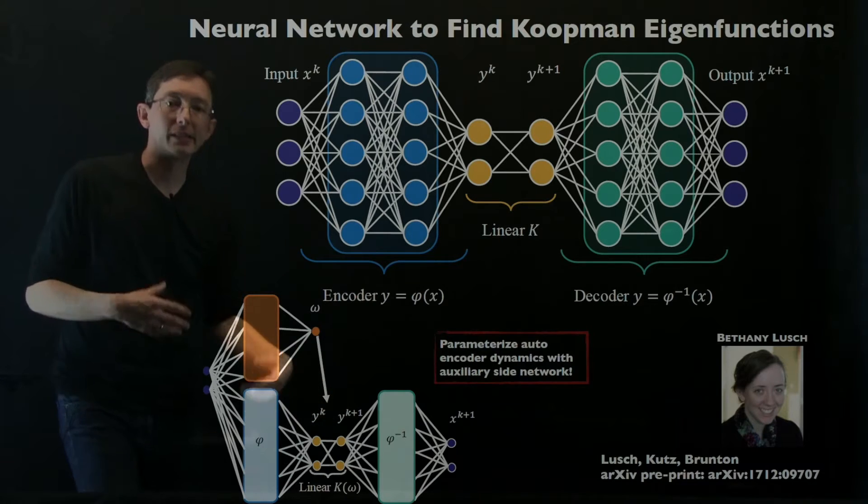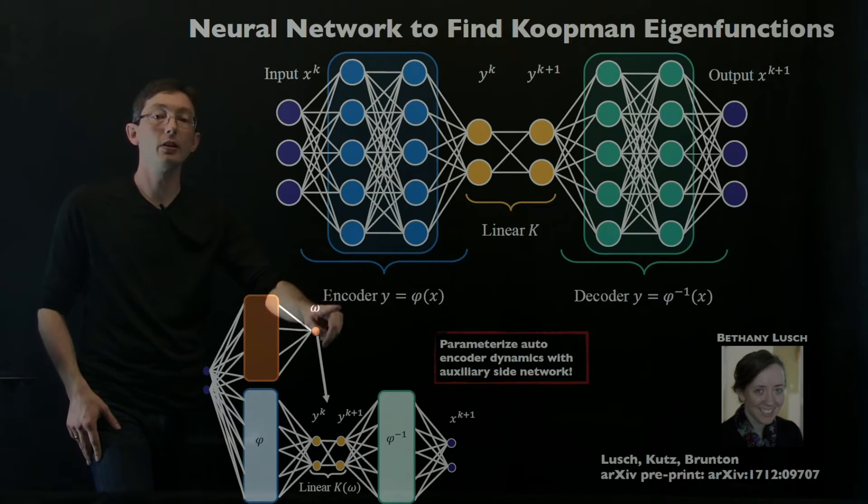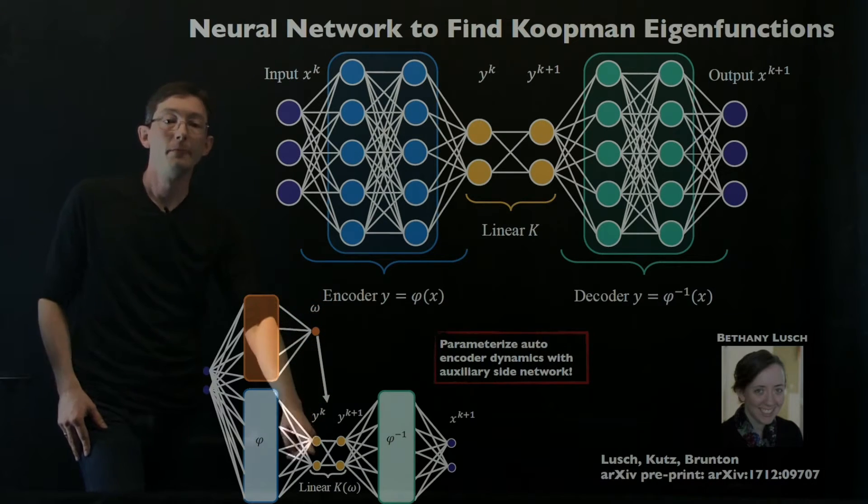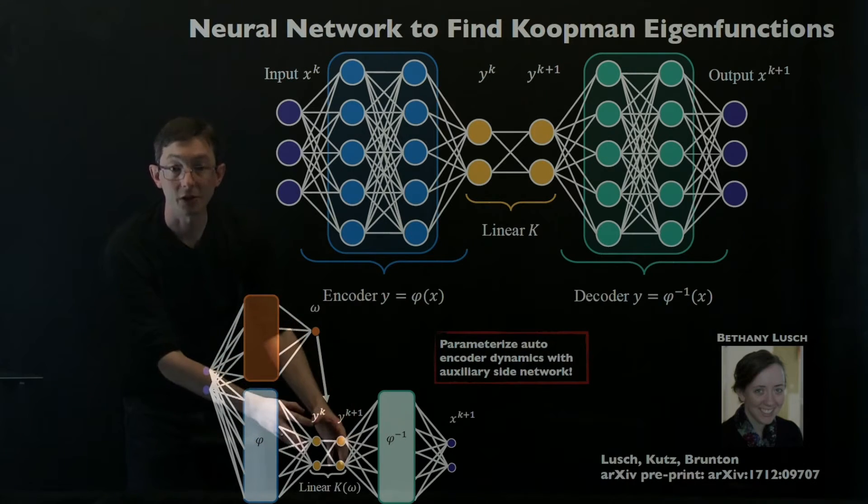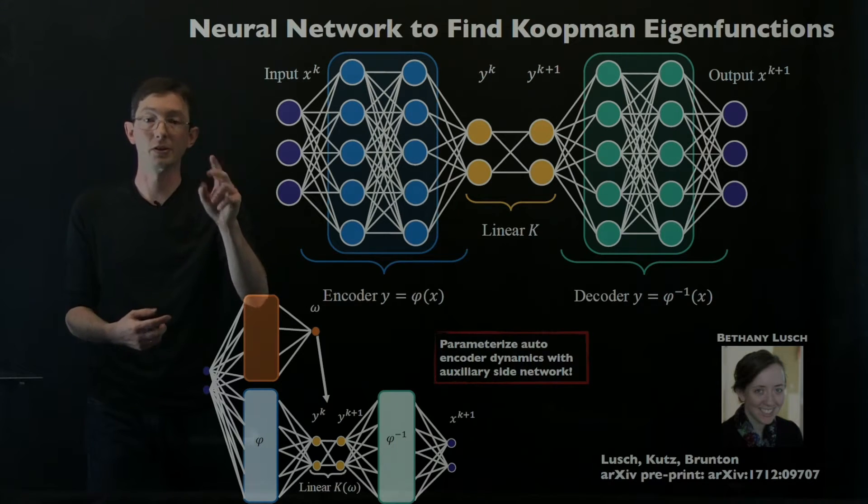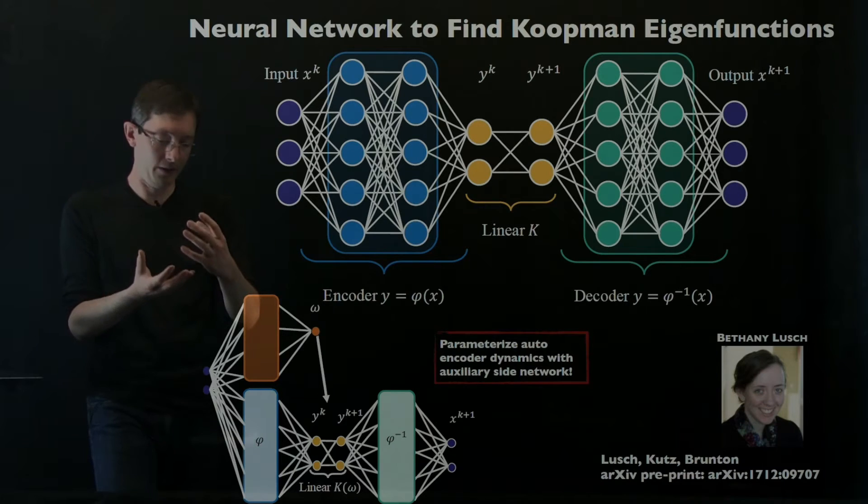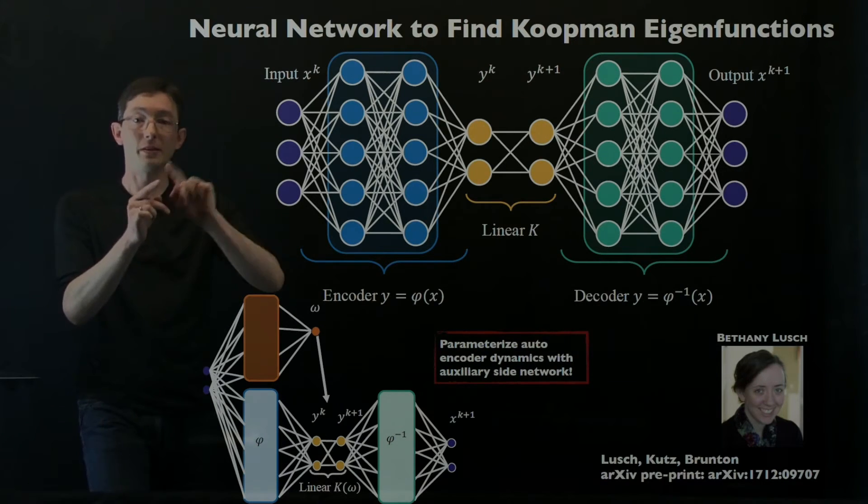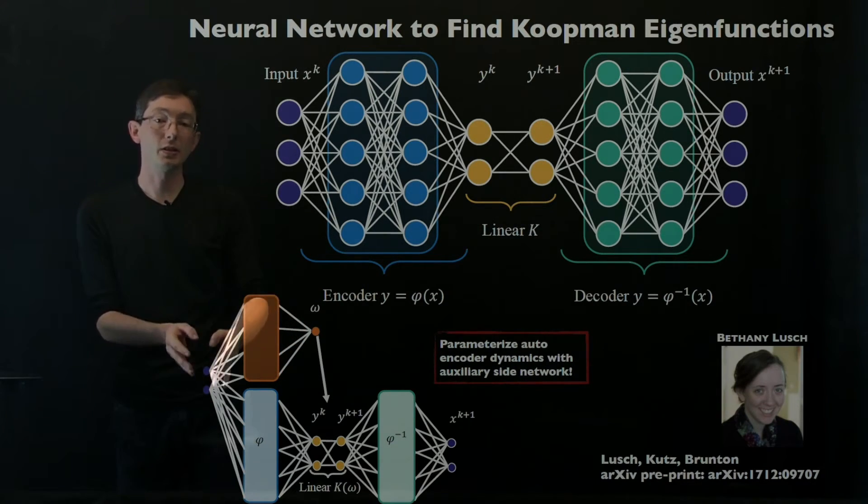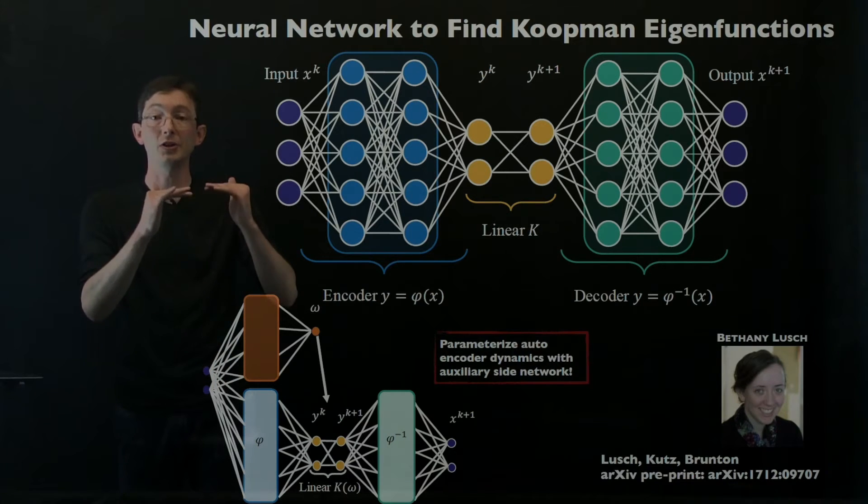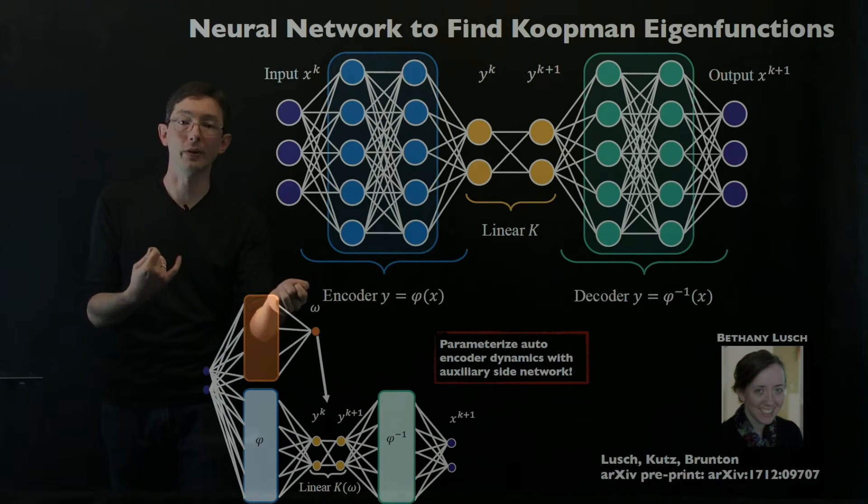What Bethany is doing instead is she builds this auxiliary side network which essentially learns the continuous parameter value omega that then parametrizes that plus or minus i omega. So we still have a structure with two eigenfunctions, complex conjugate eigenfunctions, plus and minus. We still have this Jordan block of our K operator plus or minus i omega eigenvalues. But now we have this auxiliary side network which essentially, given the energy of the system, the energy level of the system, it continuously varies the actual frequency.